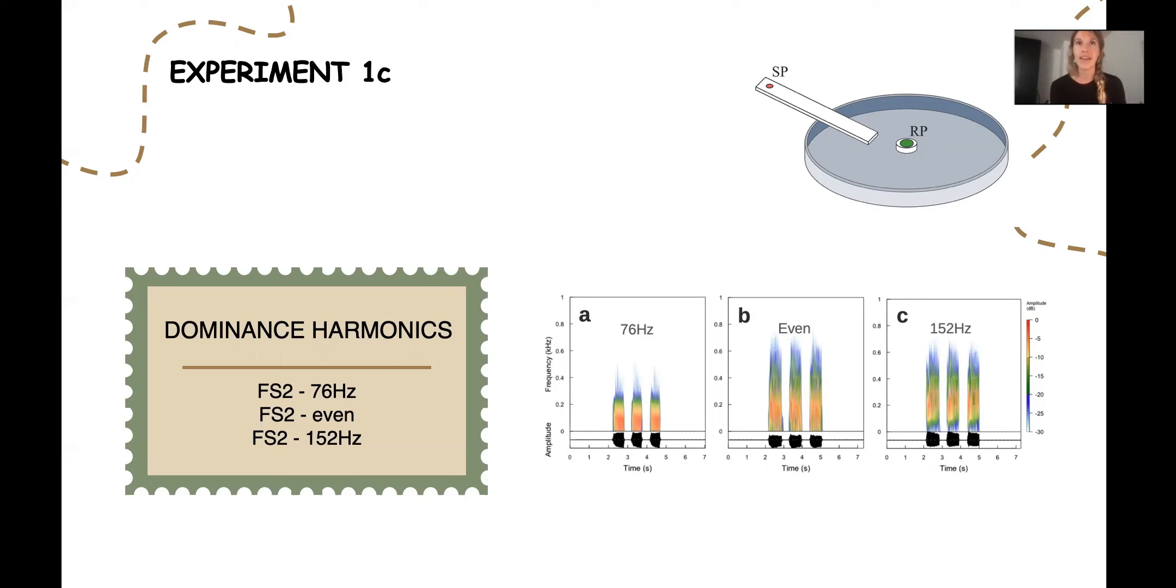We created three different sets of playbacks with variation on the first two harmonics. The A had the dominant harmonic on 76 hertz, which is the usual one. Then we had the 152 hertz, which had the dominant frequency moved to the second one, and the even which had both dominant frequencies with the same level. For each trial, all three signals were played in random order to the insects. Each playback was turned on for one minute with 30 seconds of silence in between.